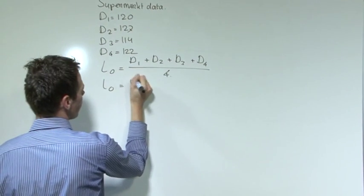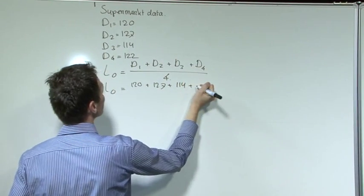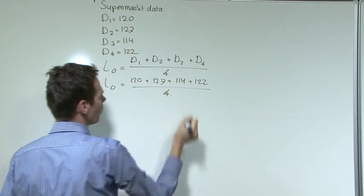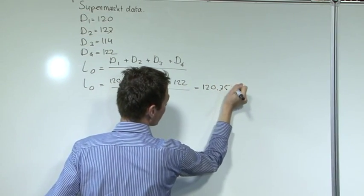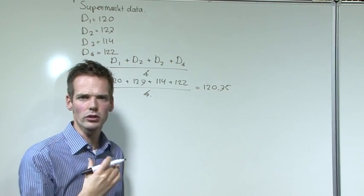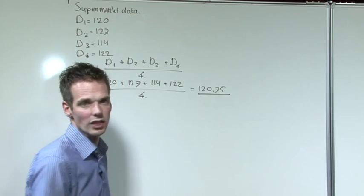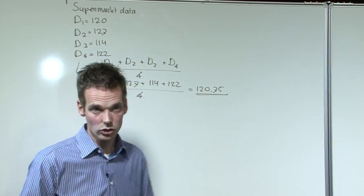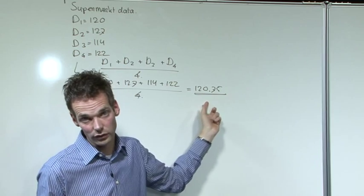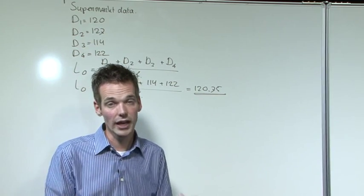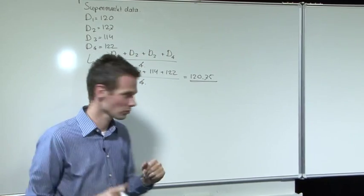So L0 equals 120.75. Please do not round this to 121, as we are going to calculate with it further on in the formula, and rounding could introduce slack into your variables — and we don't want that.